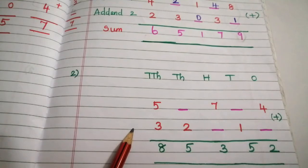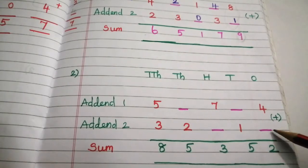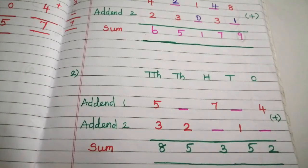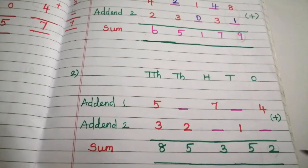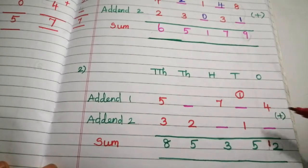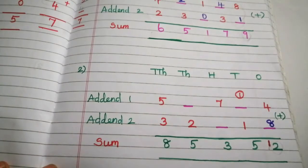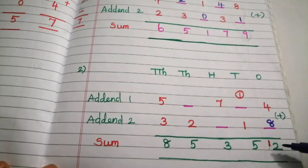In this problem, only addend digits are missing. We start from the 1's place. To find this digit, we subtract 4 from 2. But the sum digit must be greater than addend digits. Since 2 is less than 4, this is not 2 — it is 12. We put the carryover in the 10's place. Now 12 minus 4 is 8. Checking: 8 plus 4 is 12, so 2 is here and carryover 1 goes forward. Our answer 8 is correct.